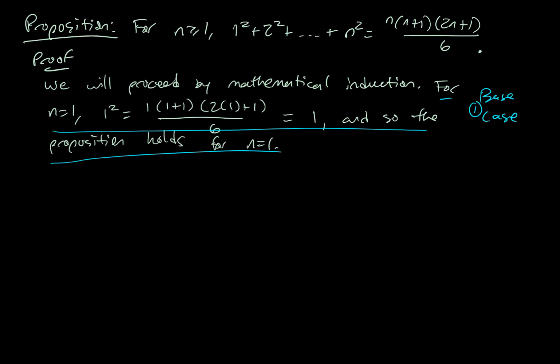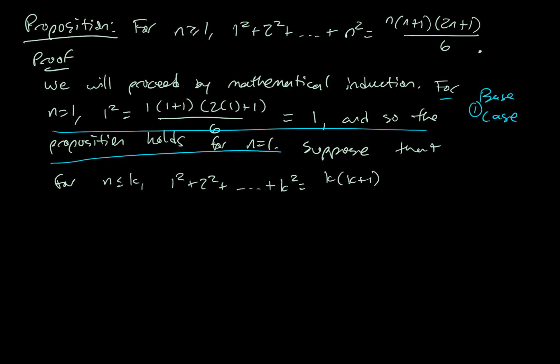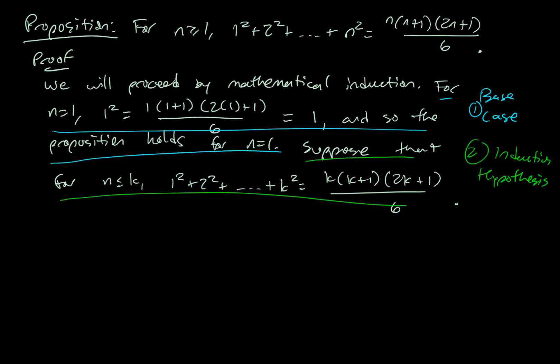You must have a base case in your induction proofs — if you don't, you can prove some horrific results that look true but aren't, because the first domino never fell down. Now we need to show that if the kth one falls down, the k plus 1 one falls down as well. We do that by supposing the kth one does fall down. So we say: suppose for n less than or equal to k, 1 squared plus 2 squared up to k squared equals k times k plus 1 times 2k plus 1 over 6. This is our induction hypothesis.